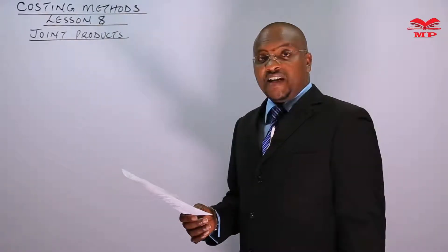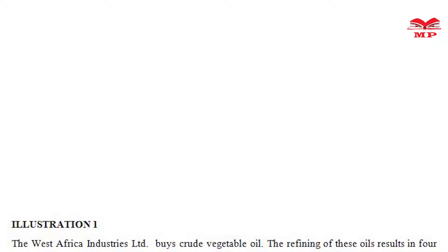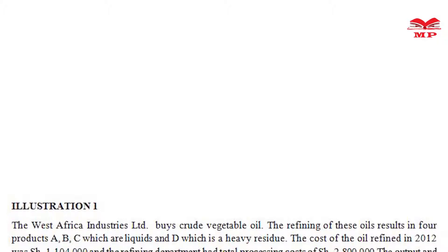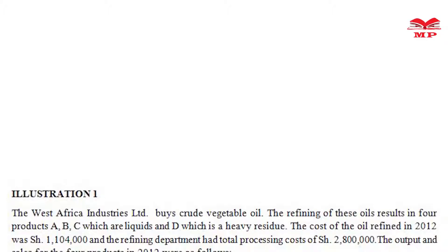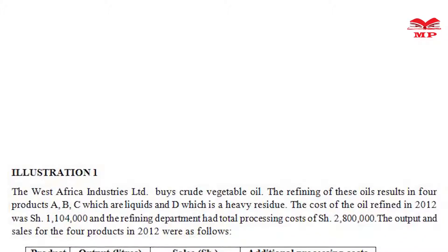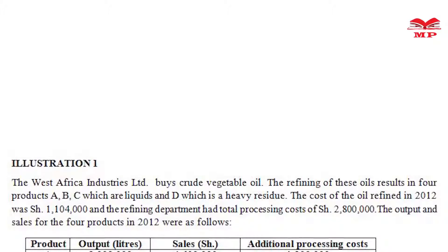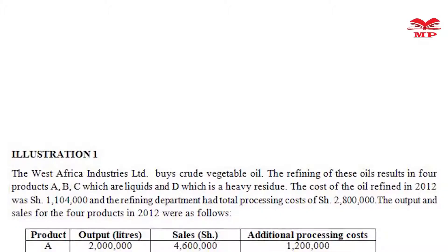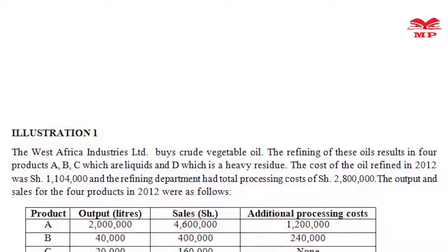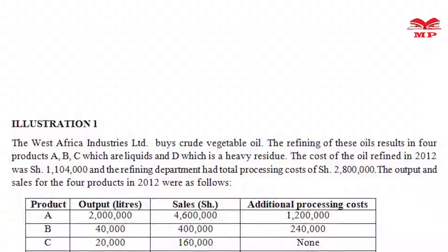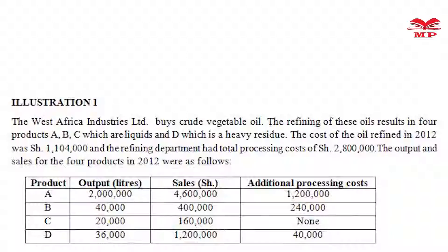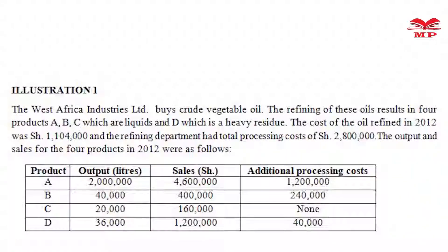Now, the question reads: The West Africa Industries Limited buys crude vegetable oil. The refining of these oils results in four products — A, B, C, which are liquids, and D, which is a heavy residue. The cost of the oil refined in the year 2012 was shillings 1,104,000, and the refining department had total processing cost of shillings 2.8 million.